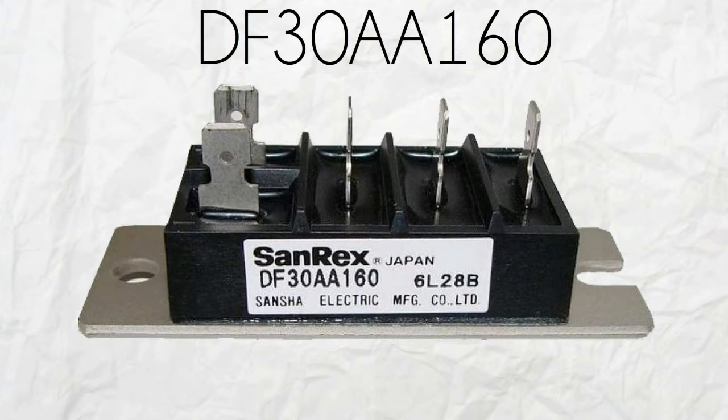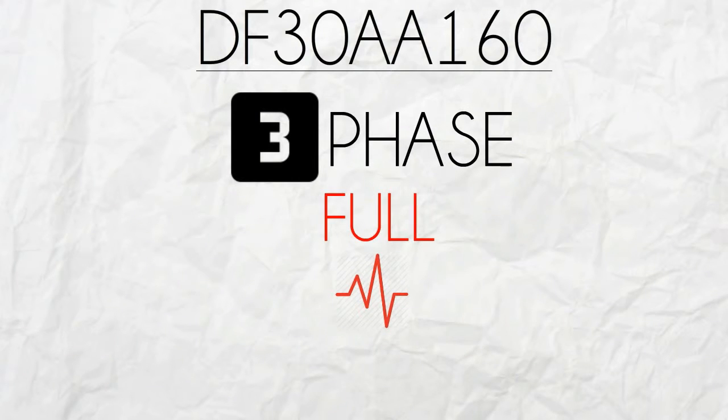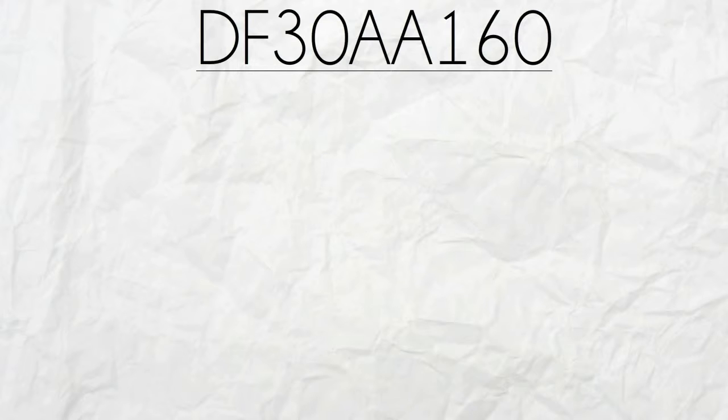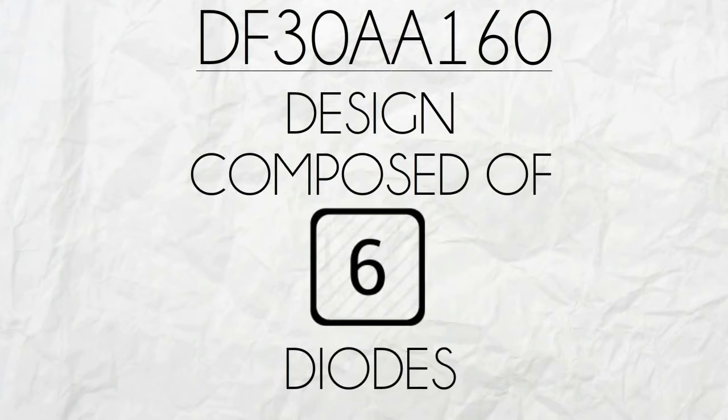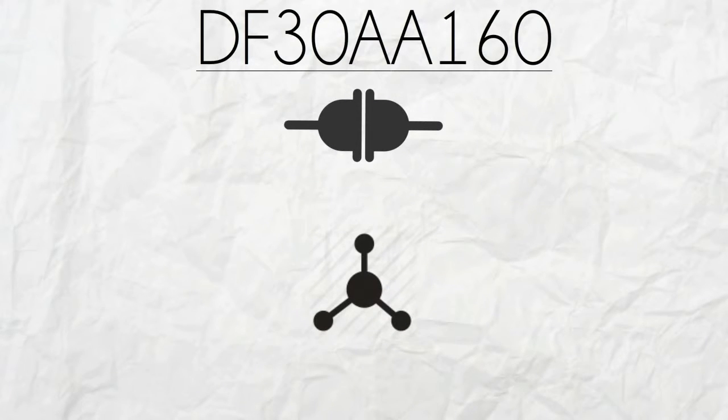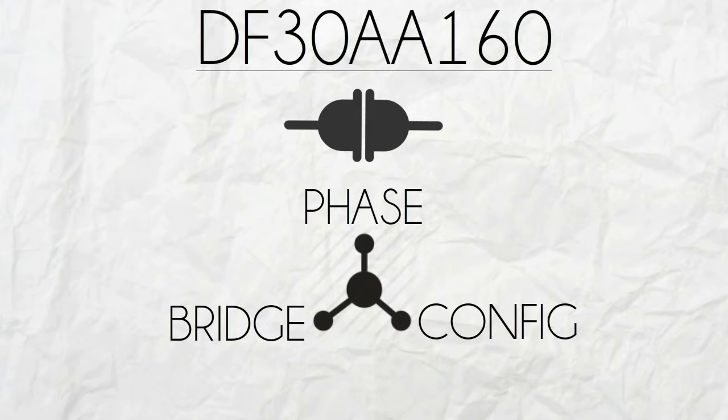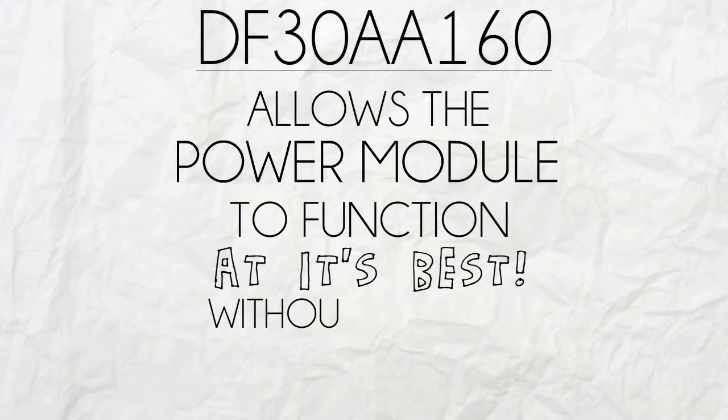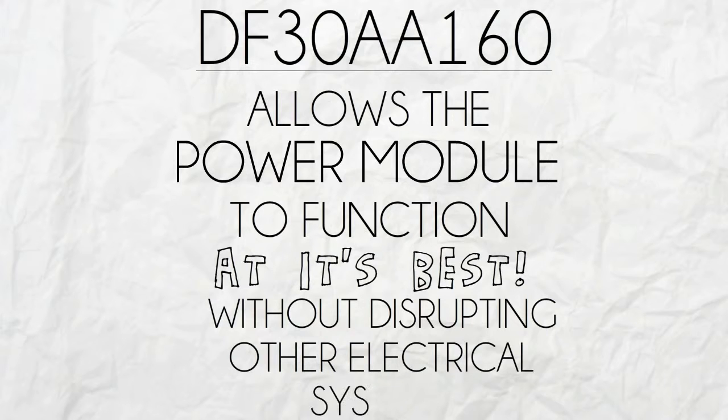DF-30AA-160 has a three-phase full-wave rectification. It is a design composed of six diodes connected in a three-phase bridge configuration which allows the power module to function at its best without disrupting other electrical systems.